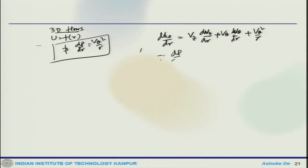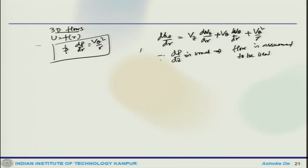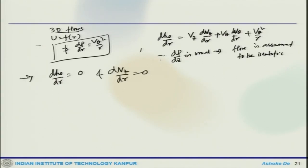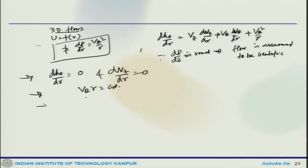Since dp/dz is small, the flow is assumed to be isentropic. In free vortex design, we assume dh0/dr = 0 and dvz/dr = 0, so the radial equation gives v_theta * r = constant. The same is true for free vortex design of a turbine. Following the procedure already adopted for the axial compressor, this design method can be evolved for the free vortex case of the turbine stage.